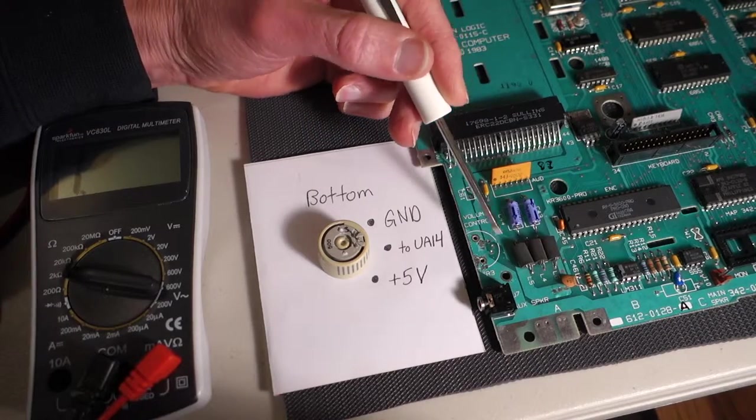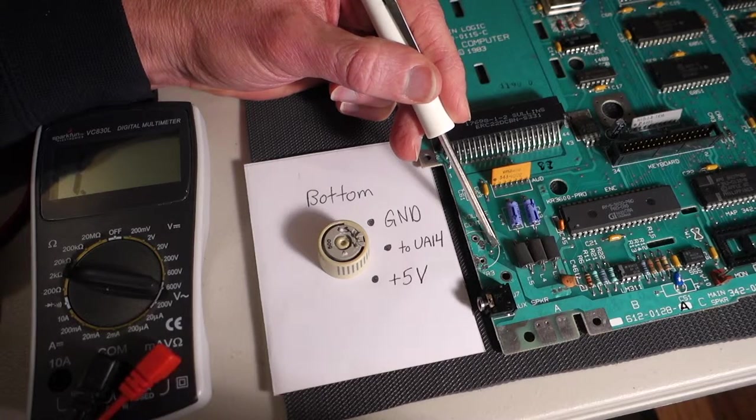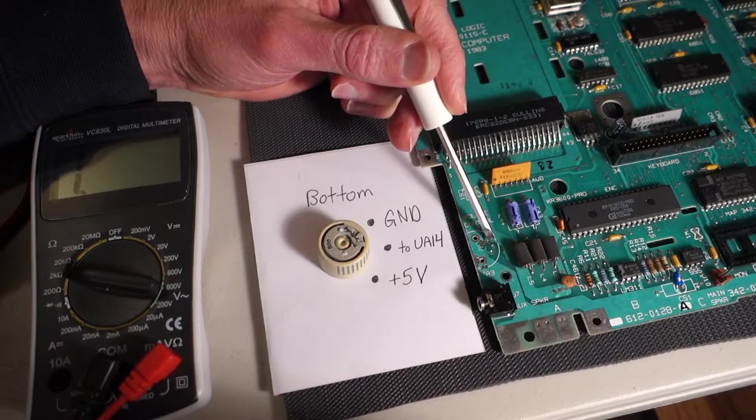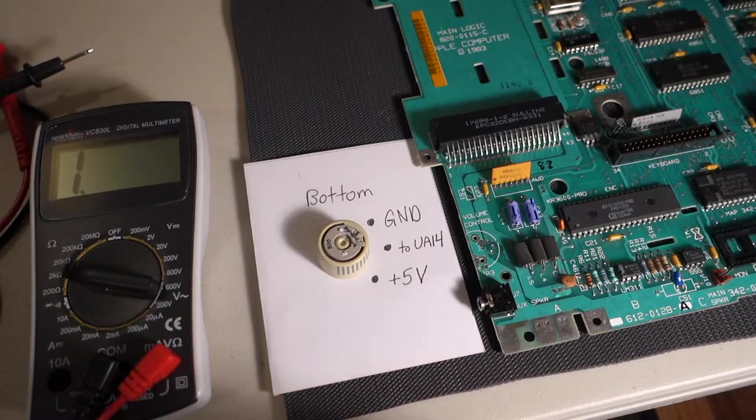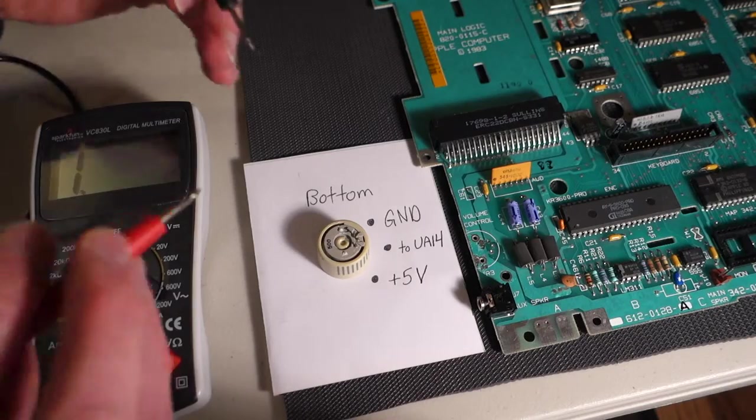So over here on the main board this is the ground pin here and then here in the middle this is the one going to UA14 which is up here and then this top pin is the plus five volts. So now we can analyze the resistance of this just to see if it is a 500 ohm.